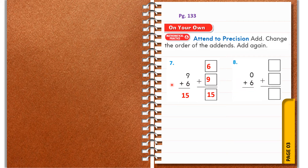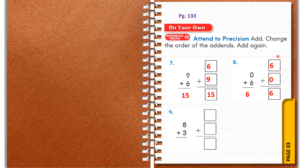Question eight: six plus zero. We have learned the rule — any number added with zero gives the same number itself, so six plus zero equals six. Now change the order and write zero in the first place: zero plus six should give you the sum again, the same as six.